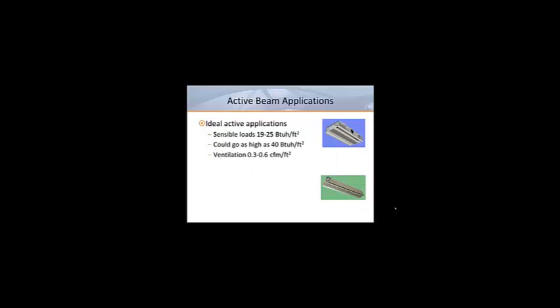Now let's take a look at active beam applications. It is much easier to find good applications for active beams because they handle both sensible and latent while addressing ventilation requirements. Generally speaking, they are best suited for spaces where sensible loads range from 19 to 25 BTUs per hour per square foot, but they have been successfully applied to handle up to 40 BTUs per hour per square foot. As far as air volume requirements, they are best suited to spaces requiring from 0.3 to 0.6 CFM per square foot. When applying active beams, the sensible heat ratio or SHR must be taken into account. This is defined as the sensible heat load divided by the total heat load. Of course, the total heat load is the sum of the sensible and the latent loads. In order to be suitable for active beams, the sensible heat ratio should be 0.7 or greater. In situations where latent loads are high, the sensible heat ratio will be lower and higher ventilation rates would likely make active beams a poor system choice.